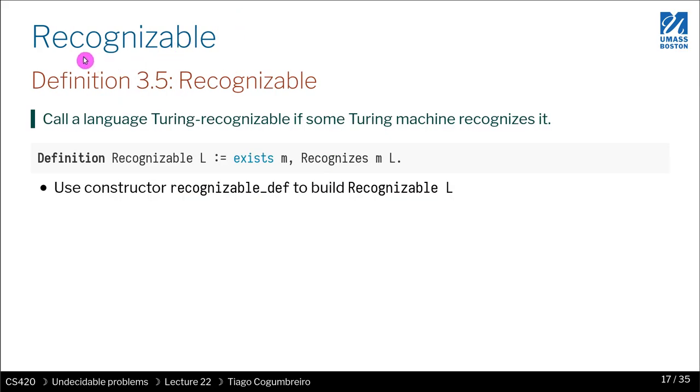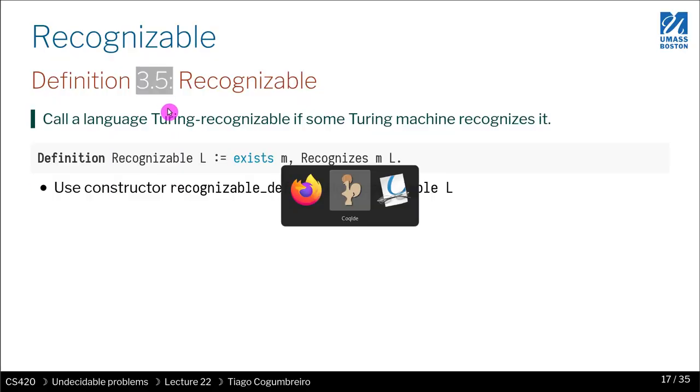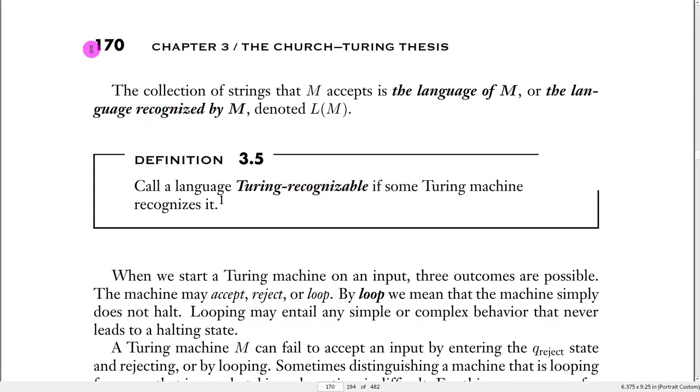The next thing we need to introduce is the notion of recognizable, and this we say of a language. So we say that a language is Turing recognizable, and this is actually found in definition 3.5 in the book, which is here, page 170 of the book. You will get that exactly this definition.